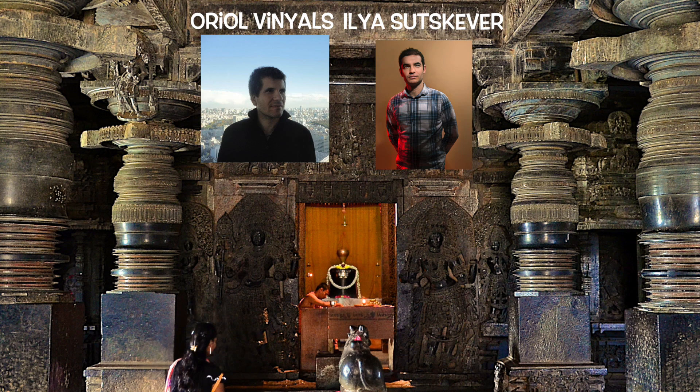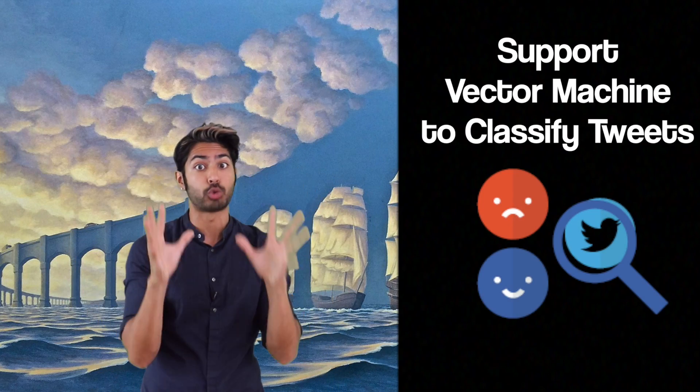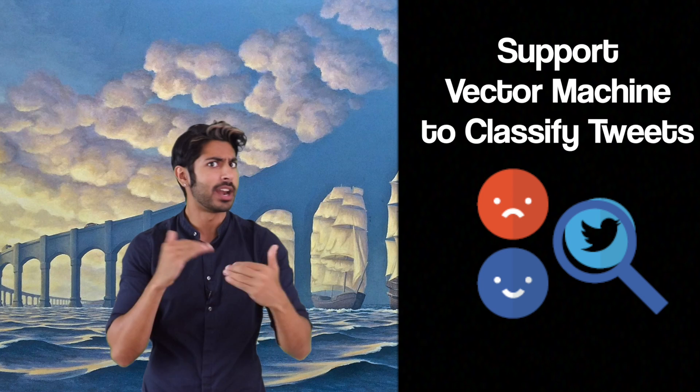Legendary researchers like Oriol Vinyas and Ilya Sutskiver consider the possibility space of hyperparameters their canvas. But what if we could have these parameters learn the optimal values for themselves? That would make life easier, right?